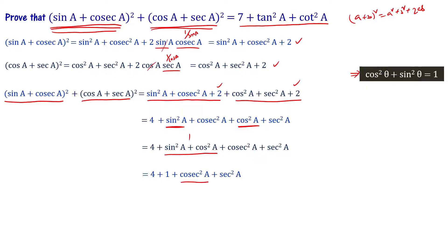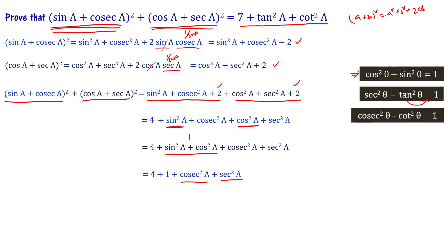Using the trigonometric identities: sec²θ = 1 + tan²θ, and cosec²θ = 1 + cot²θ. Substituting: 5 + (1 + cot²a) + (1 + tan²a) = 5 + 1 + 1 + tan²a + cot²a = 7 + tan²a + cot²a.